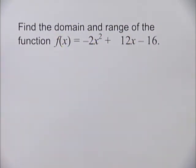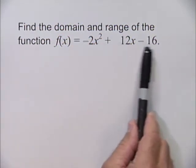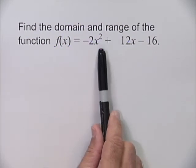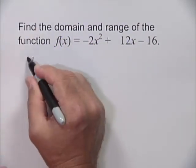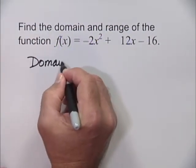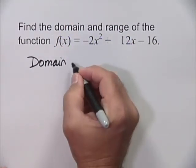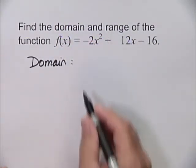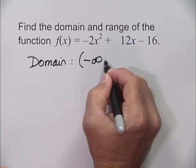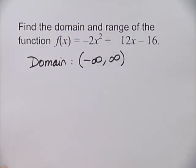Find the domain and range of the function f(x) = -2x² + 12x - 16. This is a quadratic function, and therefore we know that the domain is the set of all real numbers, or in interval notation, negative infinity through infinity.